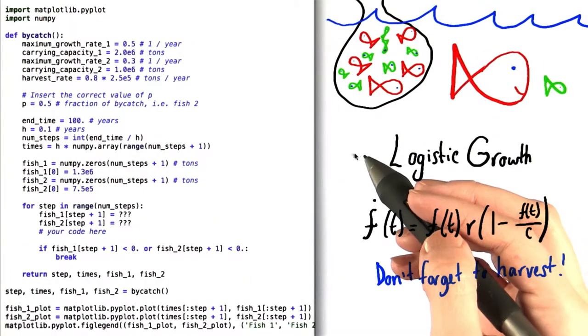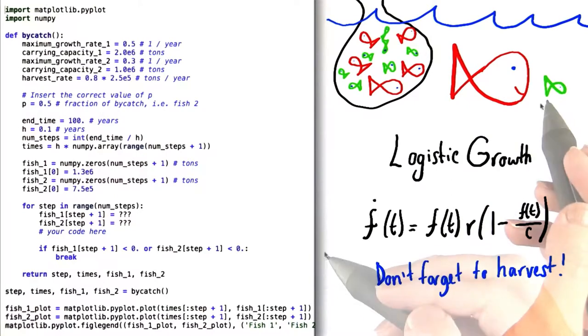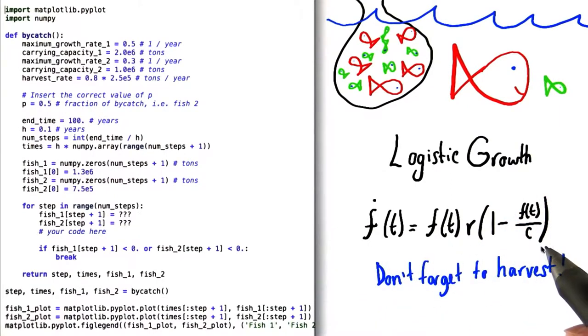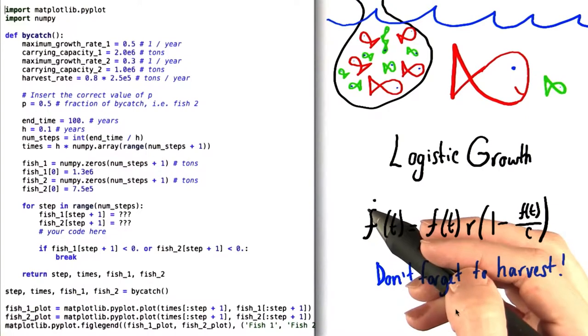Now remember, when we model the change in population for both types of fish, we need to include both population growth, which is dictated by this equation, but also the harvesting rate.